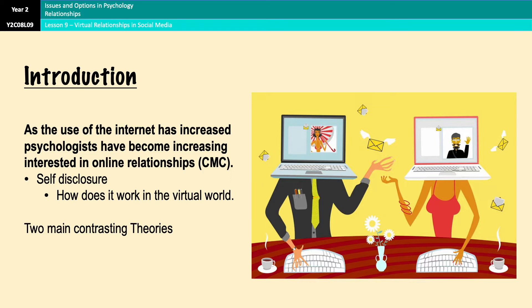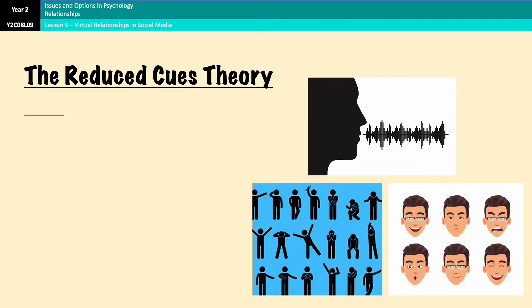There are two main theories we're going to look at during this video: the reduced cues theory and the hyper-personal model. Both focus on the importance of self-disclosure in social media based relationships and how it operates compared to face-to-face relationships.